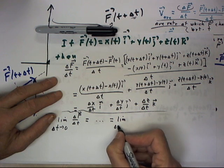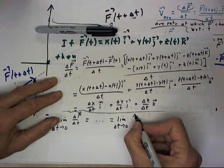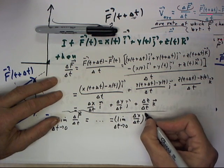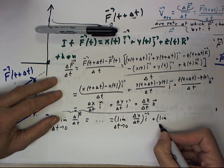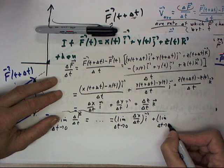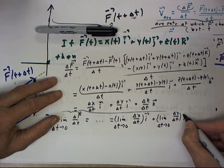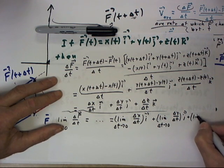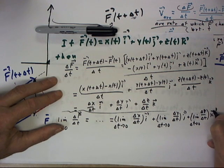Okay, the limit as delta t goes to zero of delta x over delta t multiplied by i plus the limit as delta t approaches zero of delta y over delta t times j plus the limit as delta t goes to zero of delta z over delta t multiplied by k.